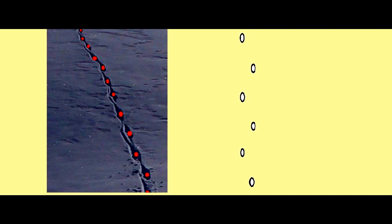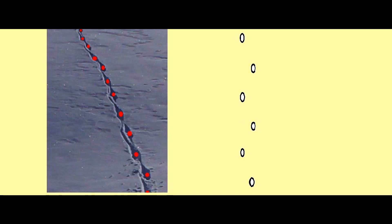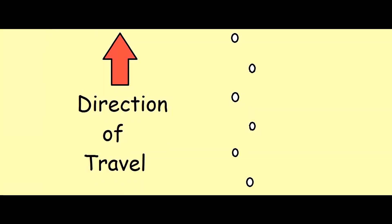When you come across a set of tracks like this showing the diagonal walking pattern, the first thing you want to do is establish the direction of travel. To make that easier we're going to turn these tracks into deer tracks. We're going to work with the deer because most people have some form of deer that lives near them.